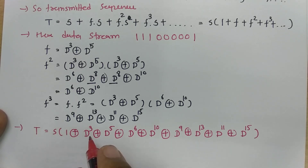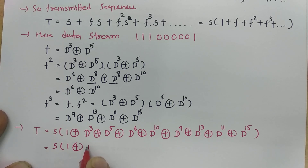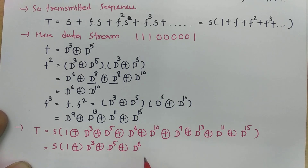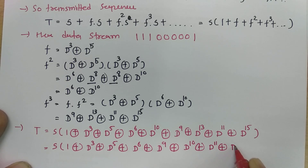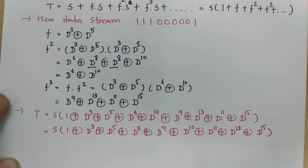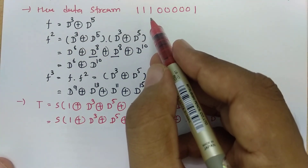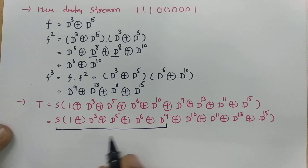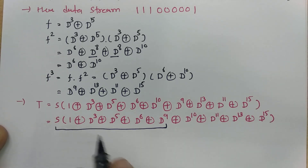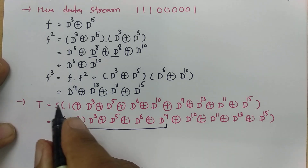Now we need to see how many common things there are — I don't see anything common. So let us rearrange this: 1 + d³ + d⁵ + d⁶ + d⁹ + d¹⁰ + d¹¹ + d¹³ + d¹⁵. Since there are only 9 data bits, only these terms are significant. Terms with delay greater than 9 bits are beyond the data stream length, so those are the significant terms for calculation.